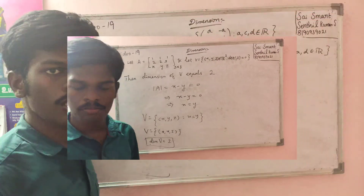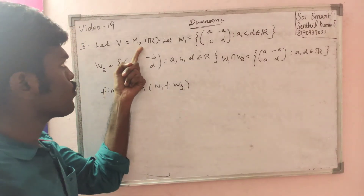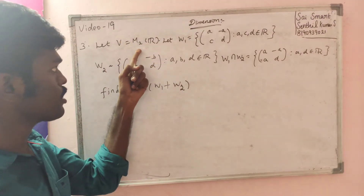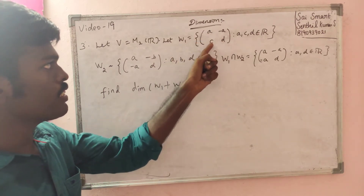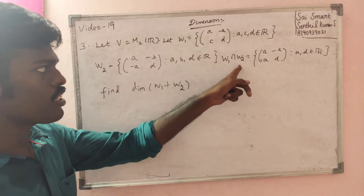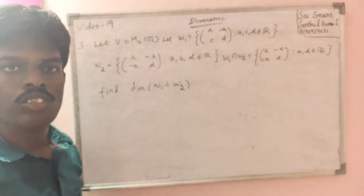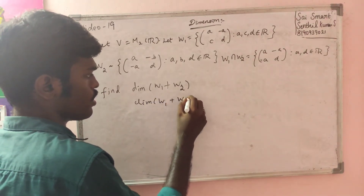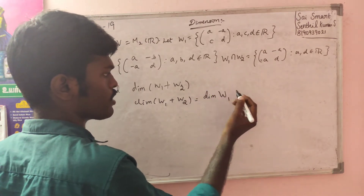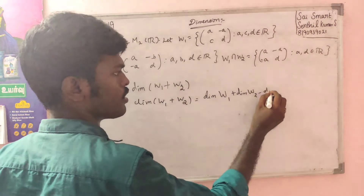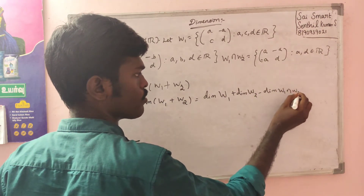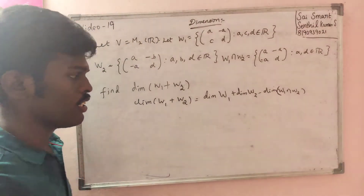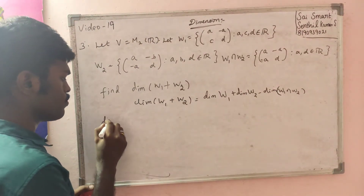This is problem number 3. We are looking at M2 of R — M2 of R is the set of 2 by 2 matrices over the real field. W1 is the set of matrices of the form [a, minus a; c, d]. W2 is the set of matrices [a, minus b; minus a, d]. We are looking at the question: dimension of W1 plus dimension of W2, and dimension of W1 intersection W2. This is the formula — the inclusion-exclusion principle.